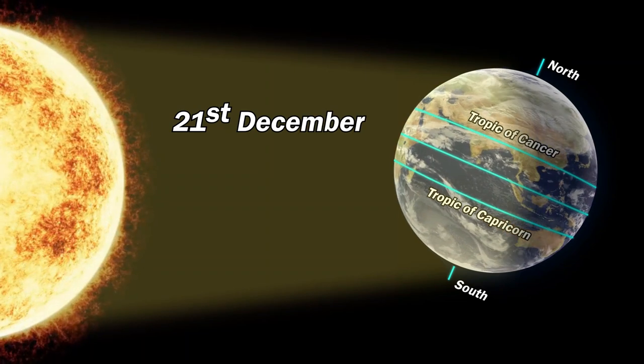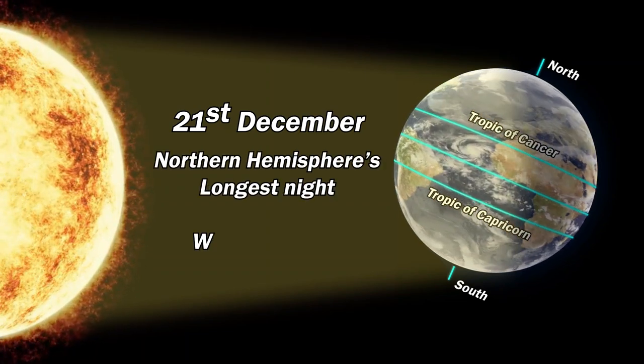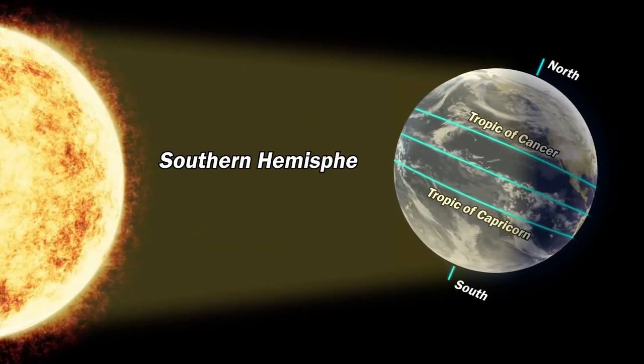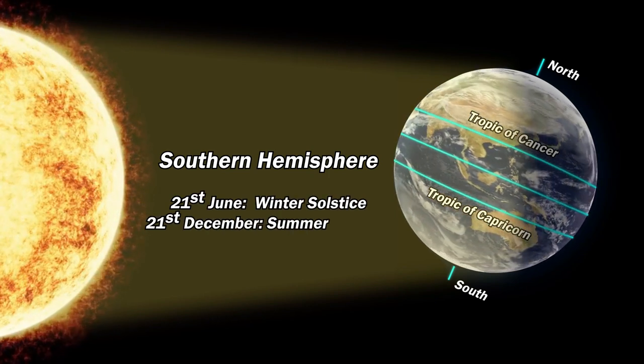Whereas on 21st of December every year, the Tropic of Capricorn gets directly in front of the sun, making it the longest night of Northern Hemisphere or the winter solstice. For the Southern Hemisphere, 21st June denotes winter solstice and 21st of December denotes summer solstice.